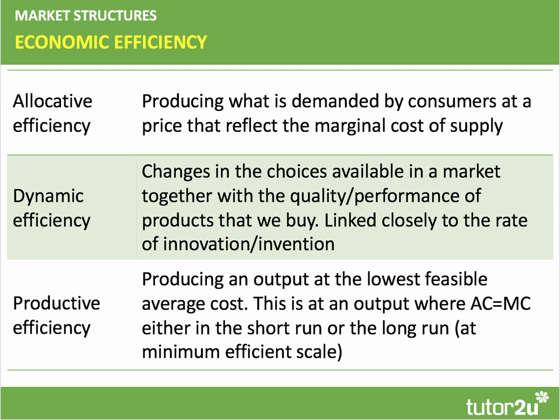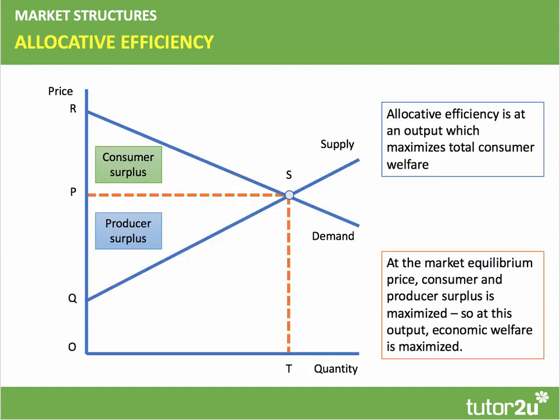A question on price discrimination should always try to comment on the likely effects on economic efficiency. At a basic level, allocative efficiency is reached where supply meets demand at equilibrium, maximizing the combined area of consumer and producer surplus — sometimes called community surplus. At that market equilibrium price where output is priced at marginal cost, welfare is maximized, assuming no externalities.